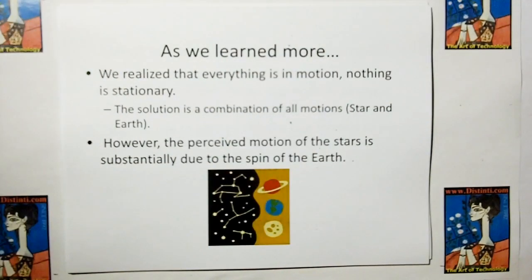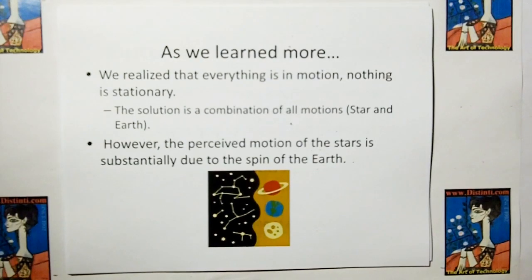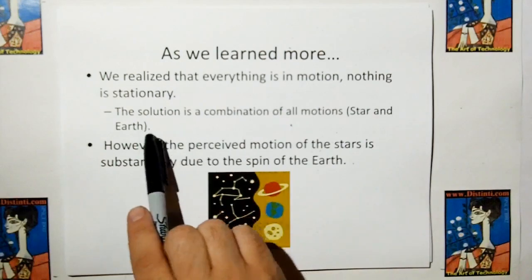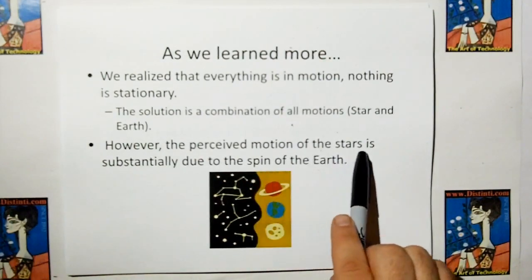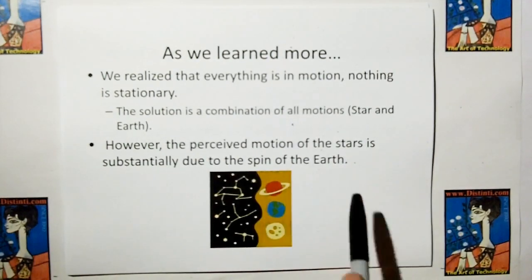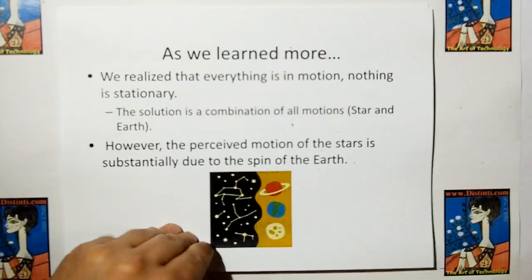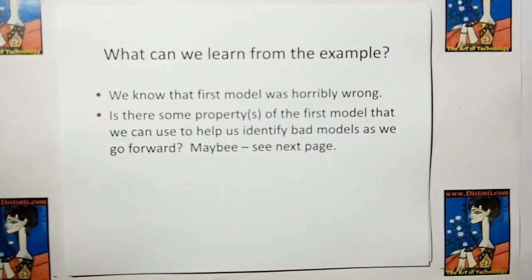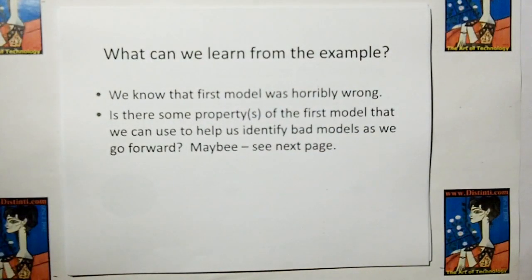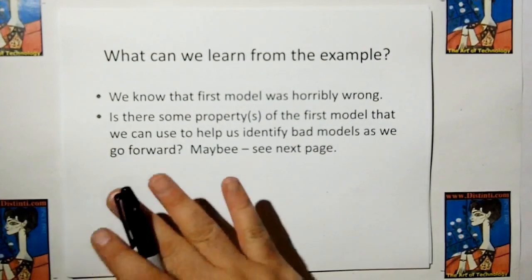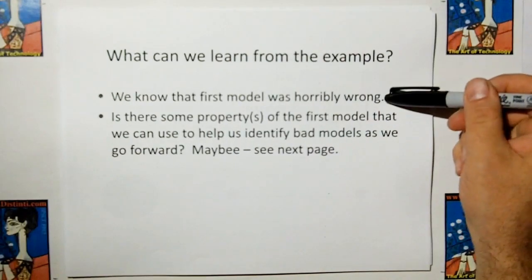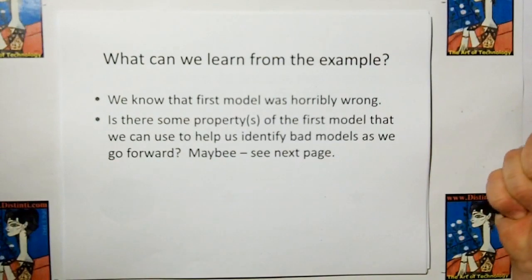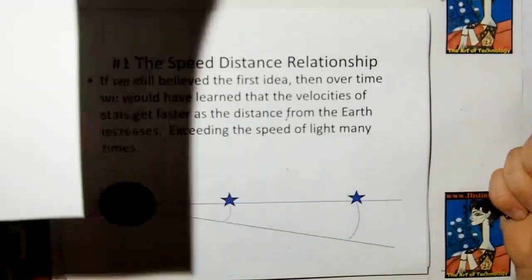But then, as we learn more, we realize that everything is in motion. Nothing is stationary. The solution is a combination of all motion, stars and earth. However, the perceived motion of the stars is substantially due to the spin of the earth. And you see, as we learn more, we learn that even Galileo wasn't 100% correct. So, what can we learn from this example? We know that their first model was horribly wrong. Is there some property of the first model that we can use to leverage, to help us identify bad models as we go forward? Maybe. Let's see the next page.